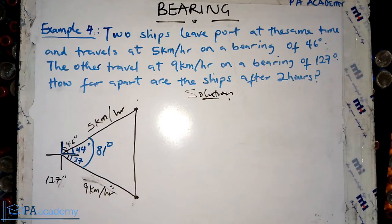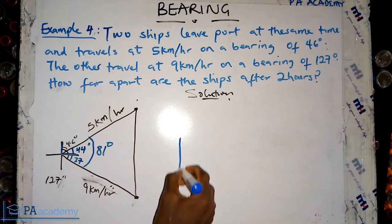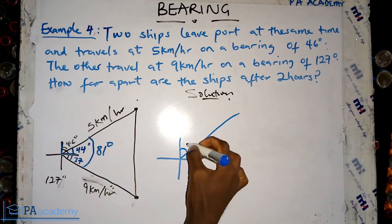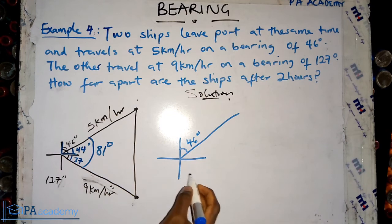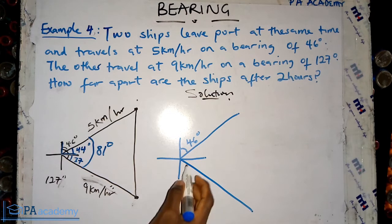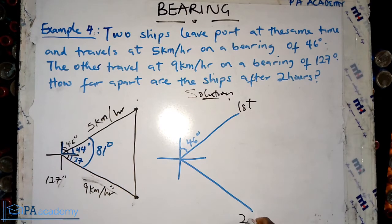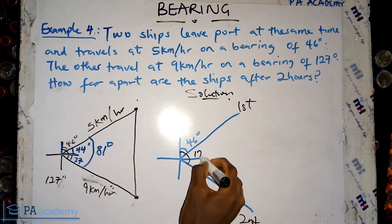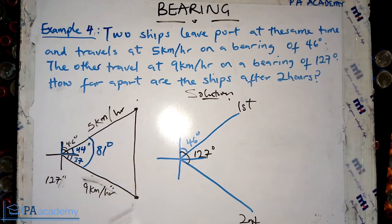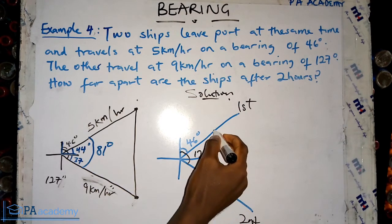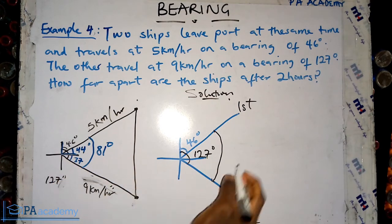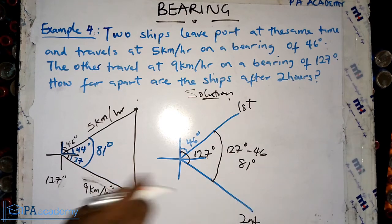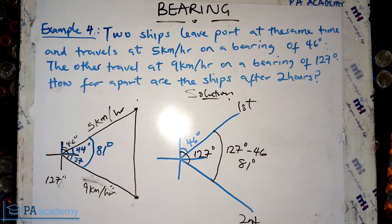Let me draw the four cardinal points clearly. The first ship is at bearing 46 degrees and the second at bearing 127 degrees. The angle from north clockwise to the second ship is 127 degrees. The angle between the two ships' paths is simply 127 minus 46, which also gives us 81 degrees. Either approach gives the same result — the included angle is 81 degrees.